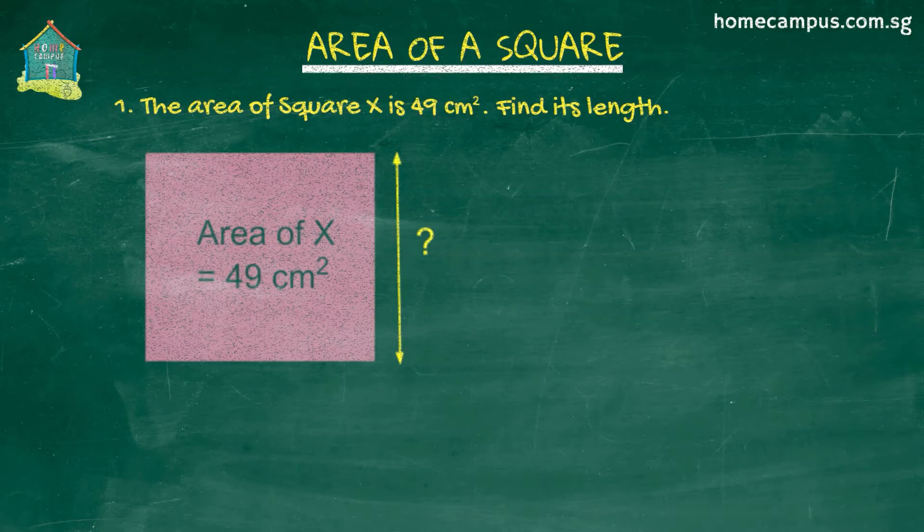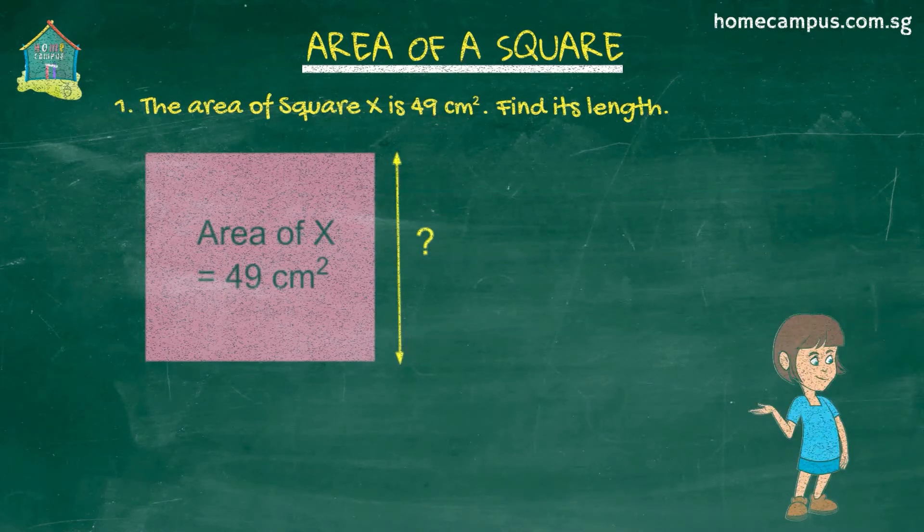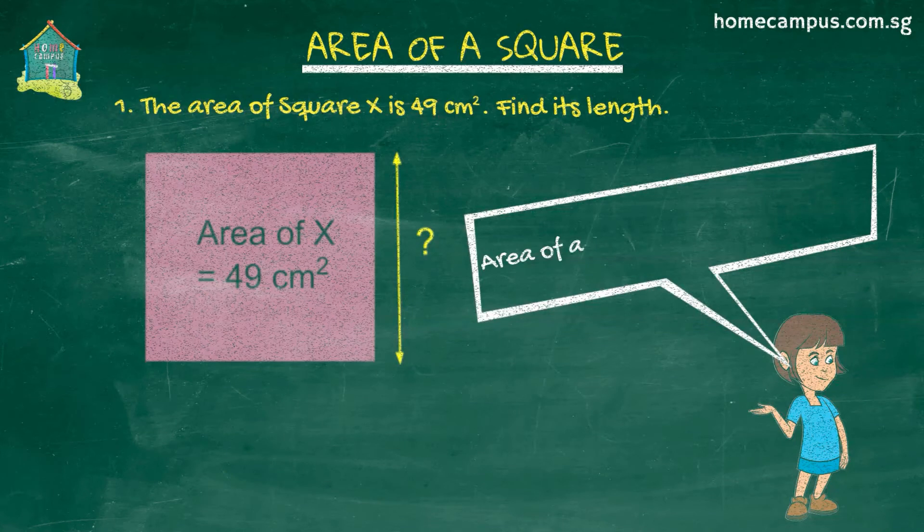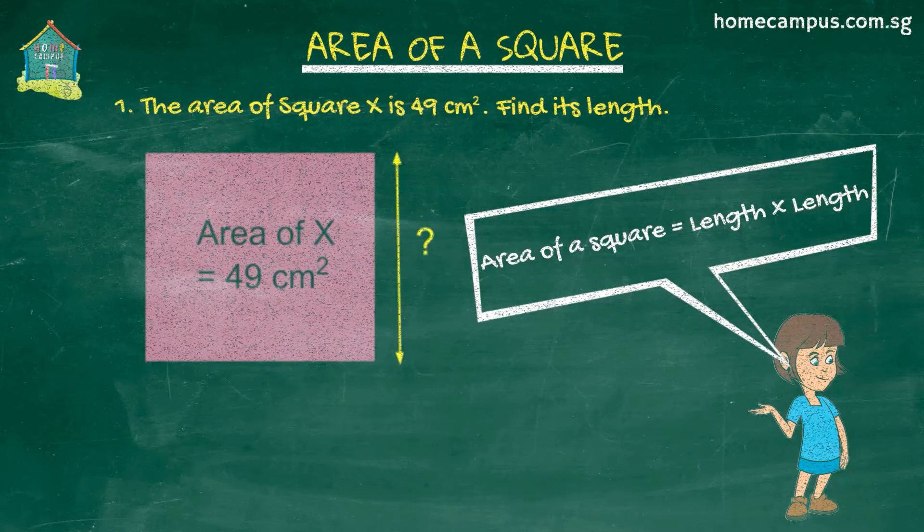Alright now let's recall from a previous tutorial that the area of a square is its side multiplied by itself. If you need to, click the link above to refresh your memory. Back to our example, the area of square X is equal to 49 centimeters square. Which means that its side multiplied by itself is equal to 49 centimeters square.